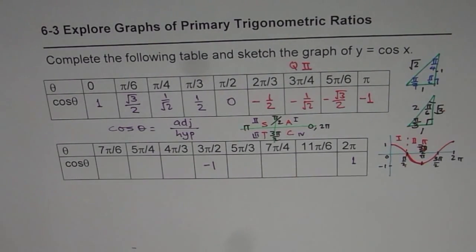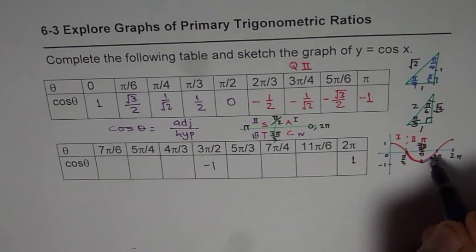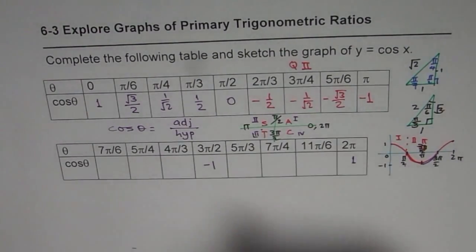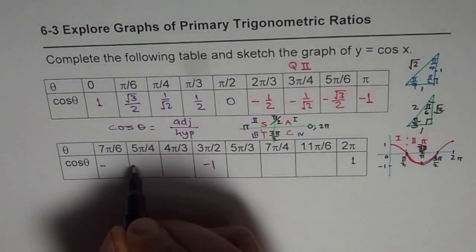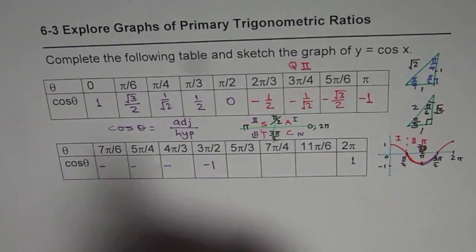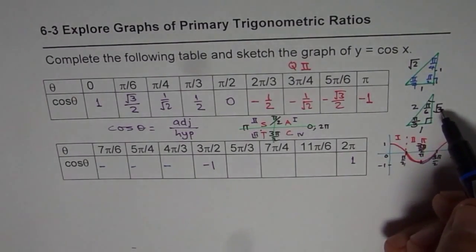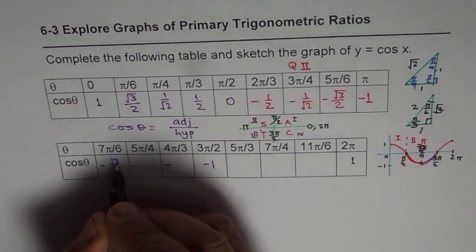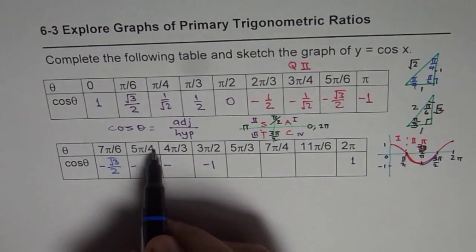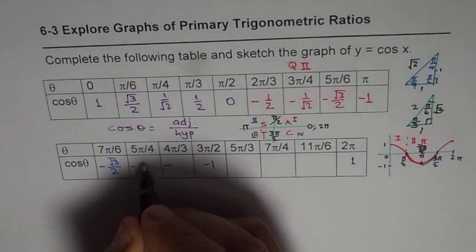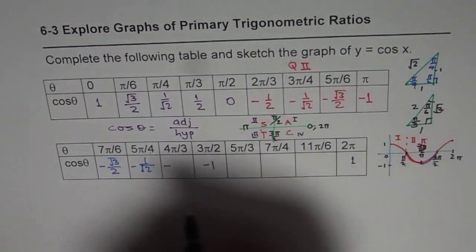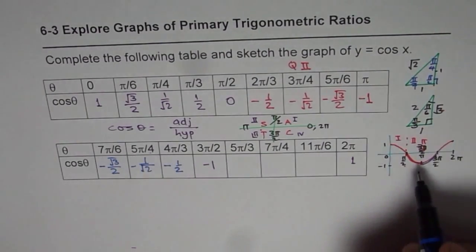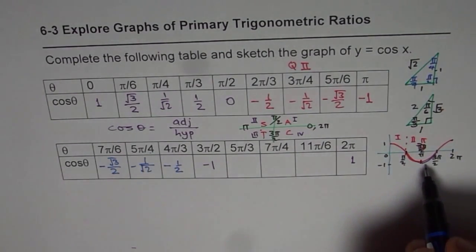Now in the third quadrant, cosine is still negative. At 7 pi by 6, the acute angle is pi by 6, giving negative square root 3 over 2. At 5 pi by 4, the acute angle is pi by 4, giving negative 1 over square root 2. At 4 pi by 3, the acute angle is pi by 3, giving negative 1 over 2. At 3 pi by 2, the value is negative 1, which is the minimum for cosine.